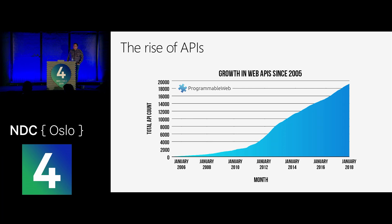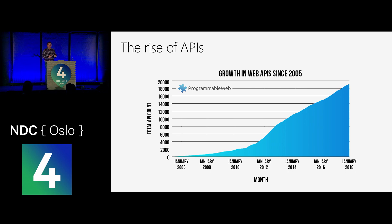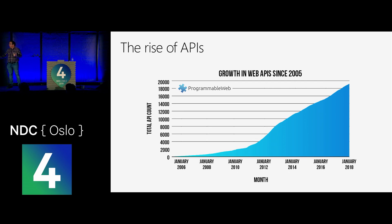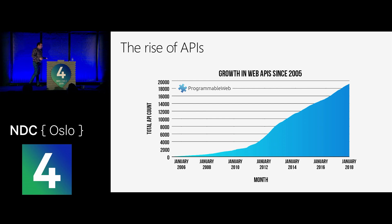When we look at APIs, we see they've been on quite a rise. Looking at public APIs from a few years back, we didn't have that many. Then around 2012 we see a huge uprising of APIs, where we are exposing data and processes to the outside world. Of course there are a lot more APIs internally, so you can imagine this has been quite a rise.